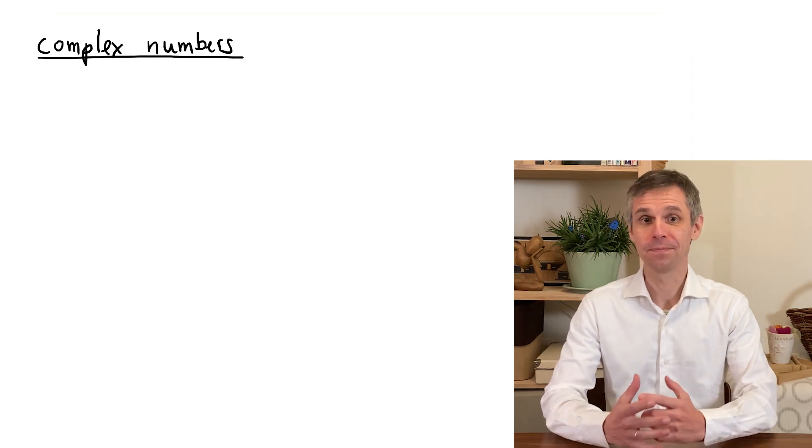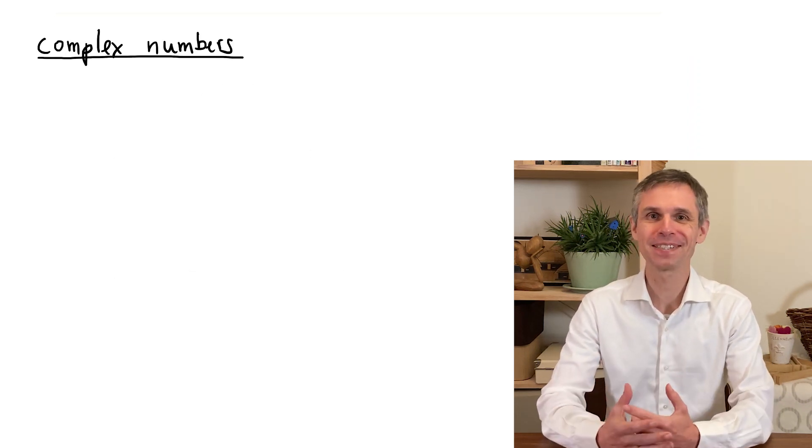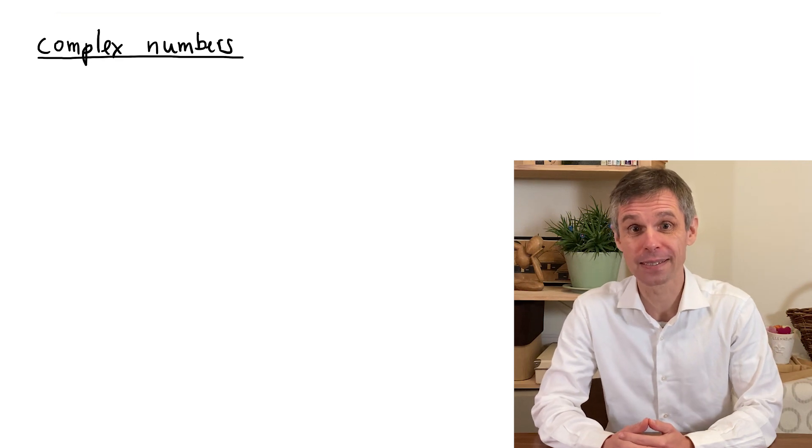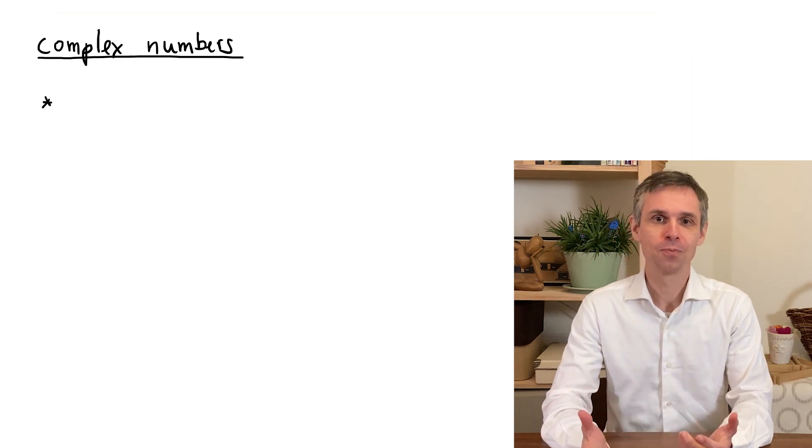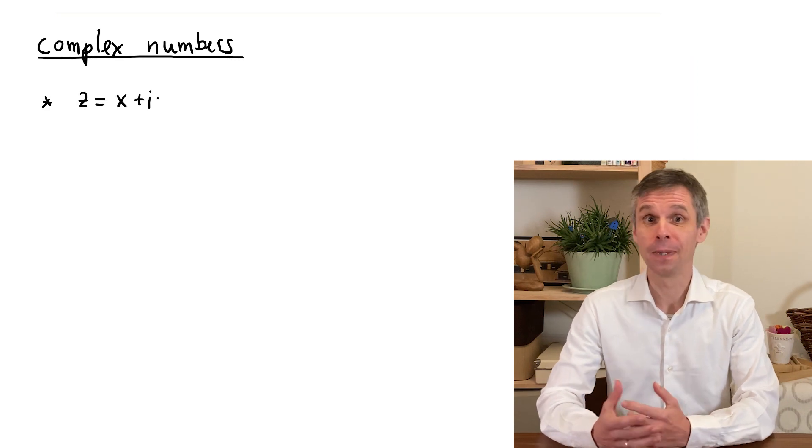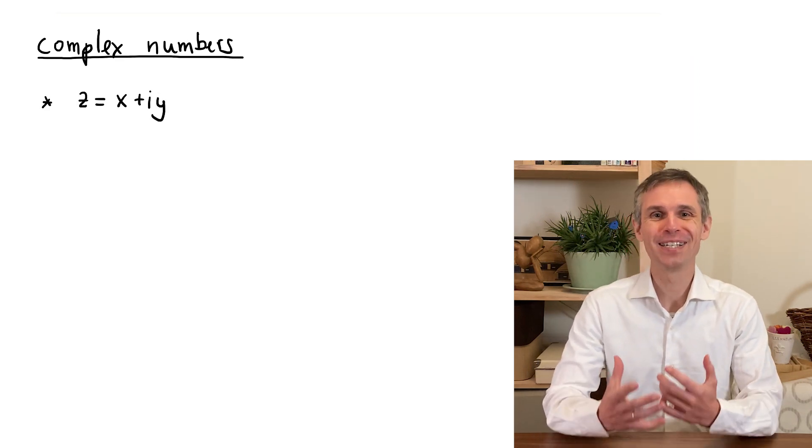We start with complex numbers, whose natural appearance is a key feature of quantum mechanics. These numbers are composed out of two real numbers, x and y, and the imaginary unit i.